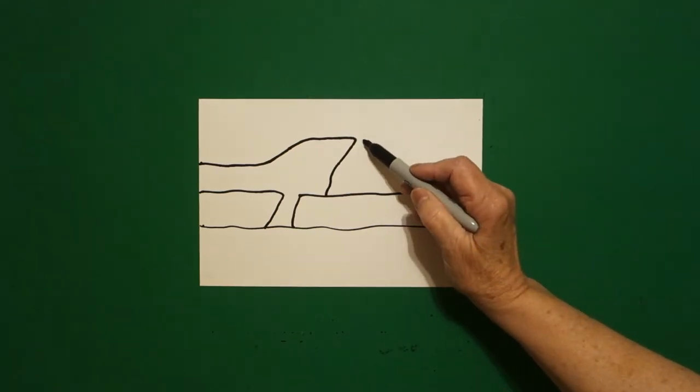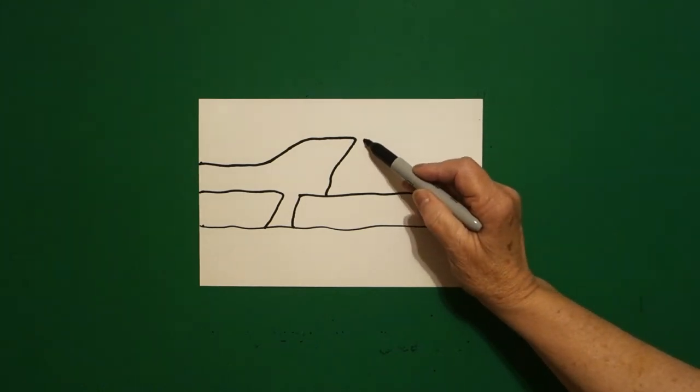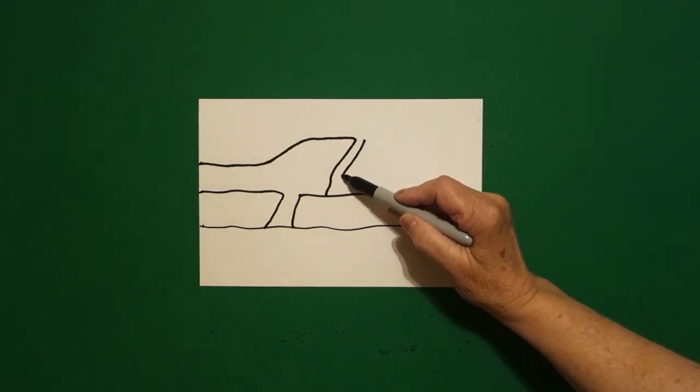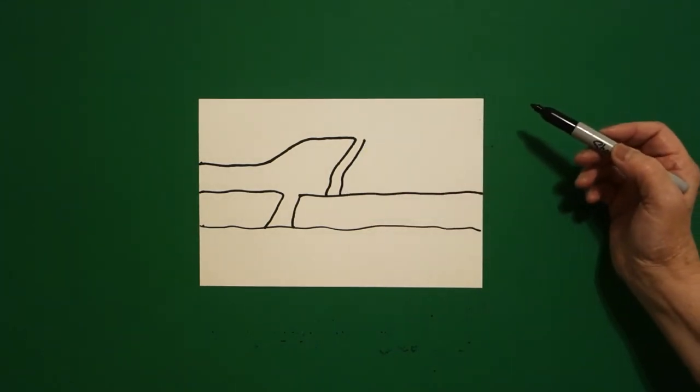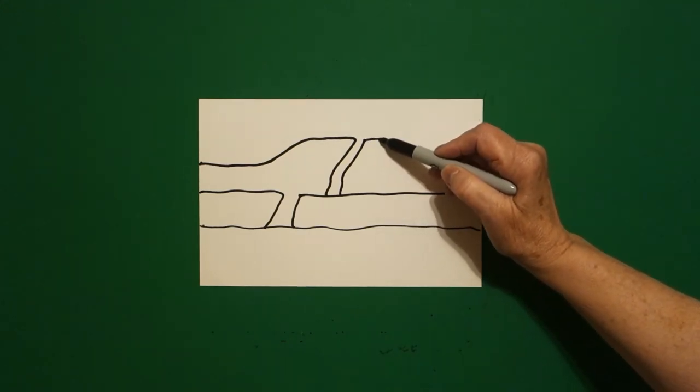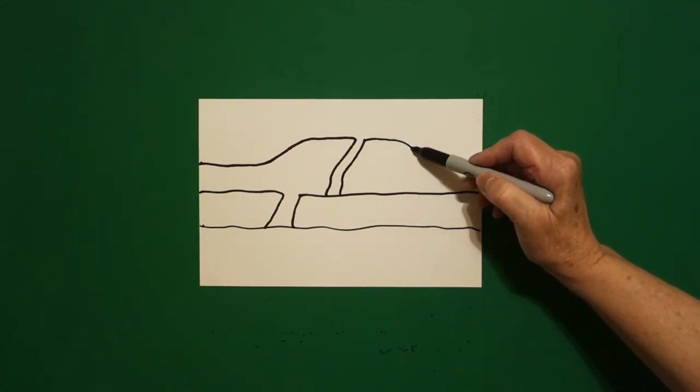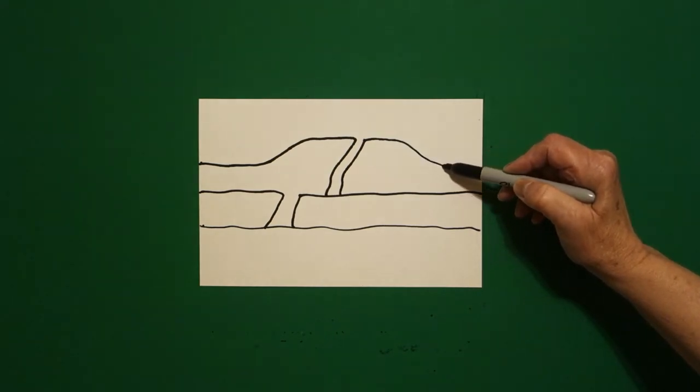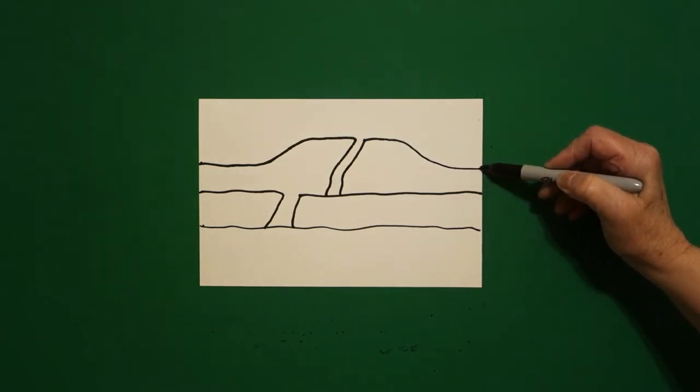Come right about here and put a dot. Draw that line down again. Connect, come back to the dot, straight line, curve it down, keep going, and off the page.